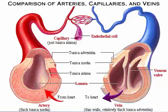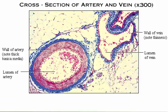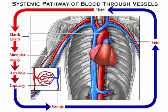The tunica adventitia is the heaviest wall layer in veins. This photomicrograph shows an artery and a vein side by side. Note the thick tunica media in the artery and the thin walls of the vein.